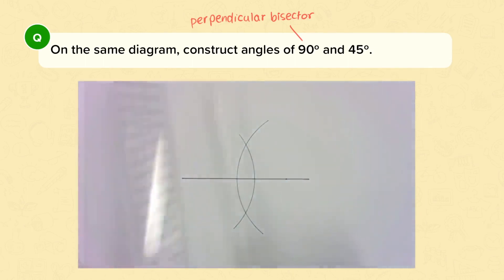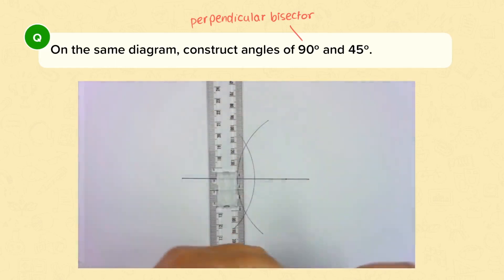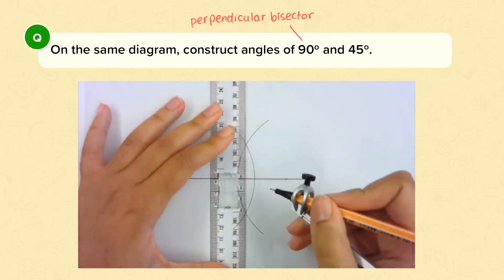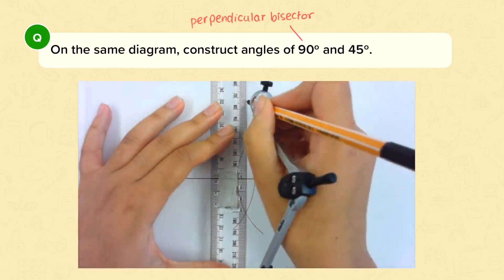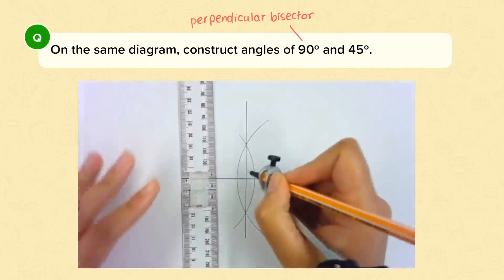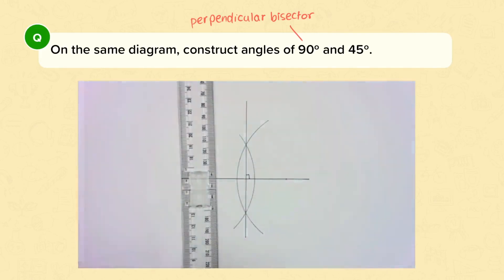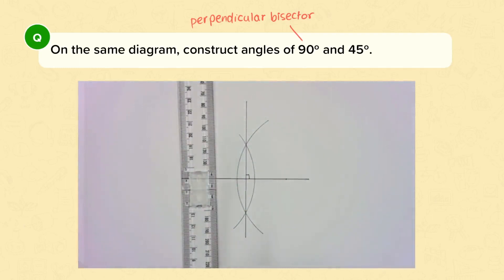Now you have two points where these arcs meet, and what you want to do is join those two points together. You've now constructed the perpendicular bisector, which means you've constructed an angle of 90 degrees. So now we want to construct an angle of 45 degrees, and we can do this by cutting this angle of 90 degrees in half using an angle bisector.